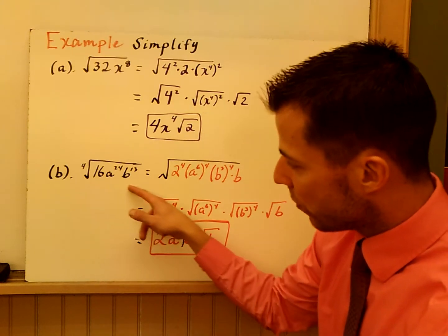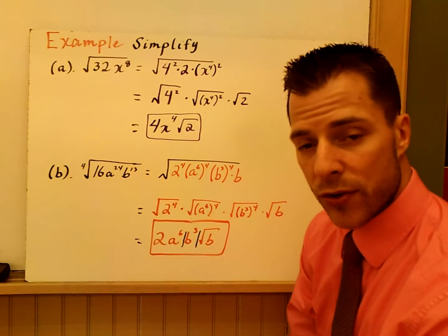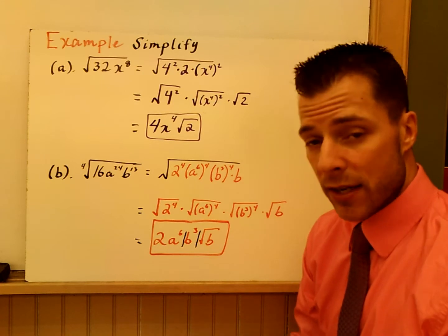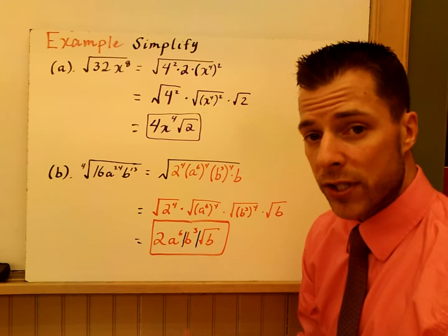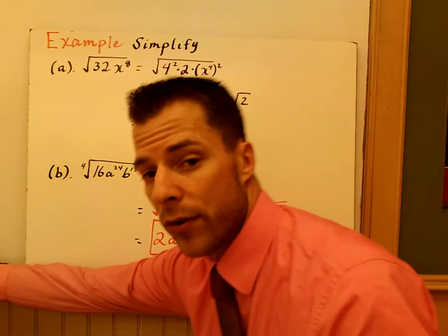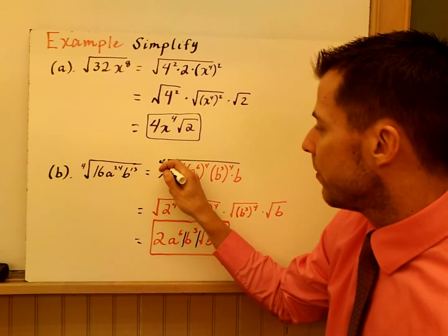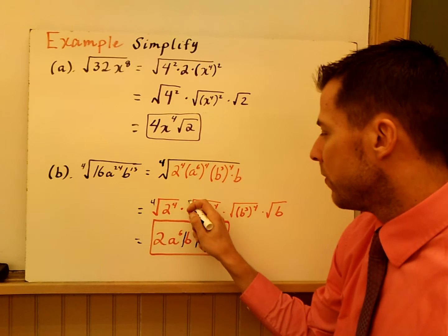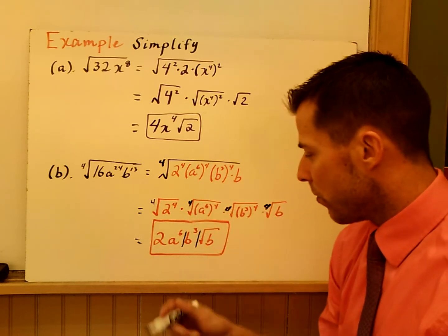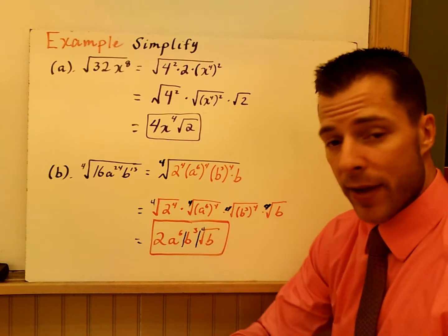Next, we have the fourth root of 16a to the 24th, b to the 13th power. Can I write any of these numbers with a power of 4 to match my index? Make sure to keep the 4 as the index throughout — that can be tricky.